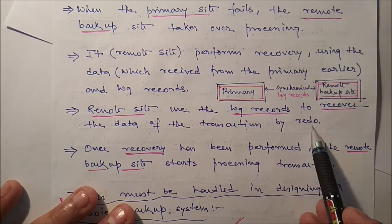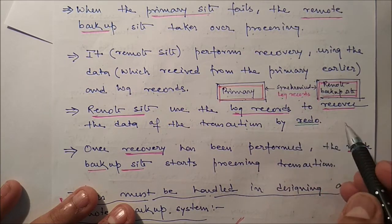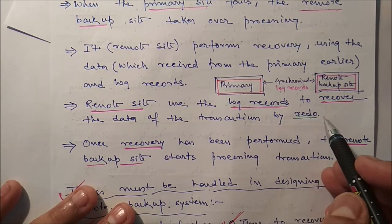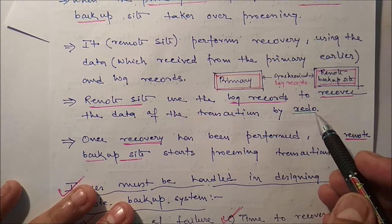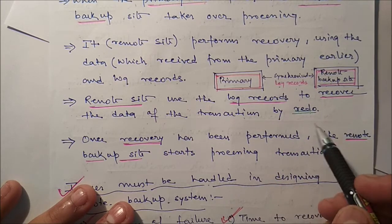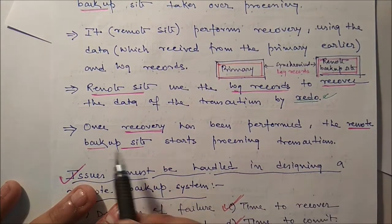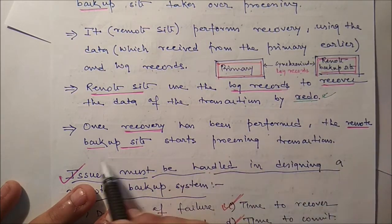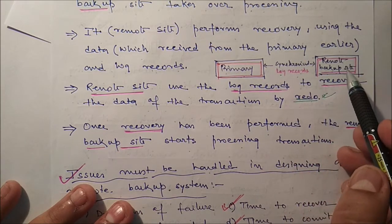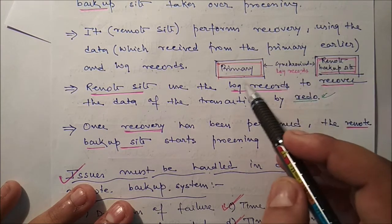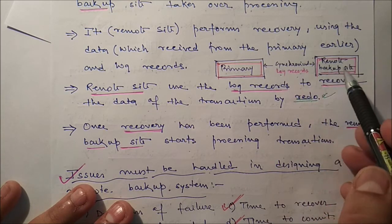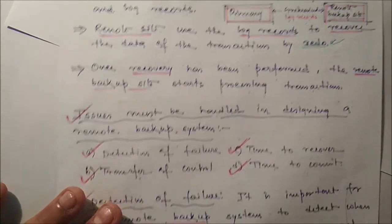The remote site uses the log records to recover data by applying redo operations. From the log file, we can determine which transactions need redo and which need undo. In the backup position, we apply redo, not undo. Once recovery has been performed, the remote backup site starts processing transactions — once it has received all the data and records from the primary, it can start executing properly.